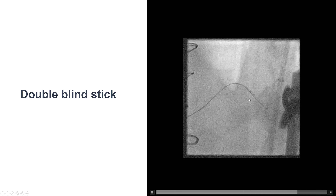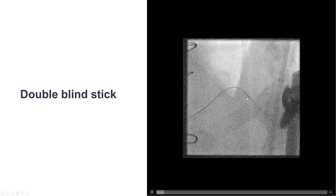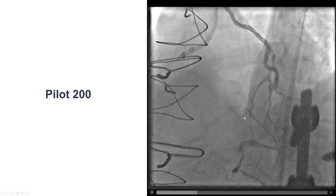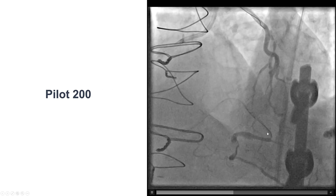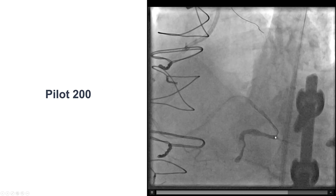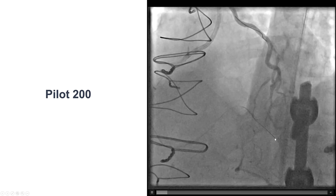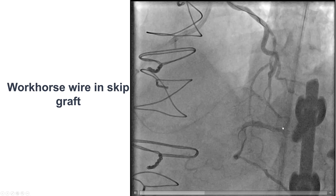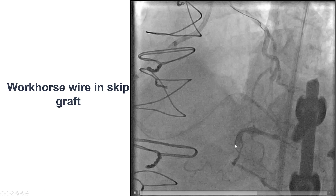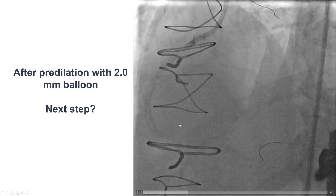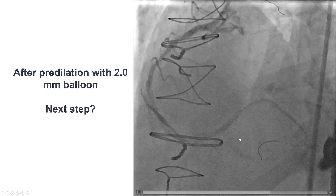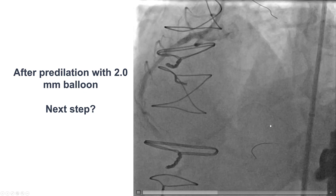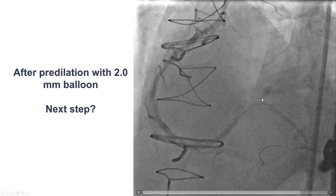We did the double blind stick and swap: we stuck proximal to the proximal marker and then performed the exit between the two markers. We advanced a Pilot 200 that seemed to course along the vessel, although it had some difficulty going through the distal segment of the anastomosis of the skip graft. We advanced a microcatheter and then used a workhorse wire that nicely advanced into the skip segment of the saphenous vein graft. We predilated the entire RCA with a 2.0 millimeter balloon — and then we saw what was not unexpected, given exit of a microcatheter and wire into the segment.